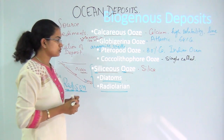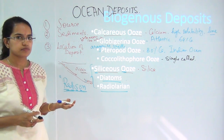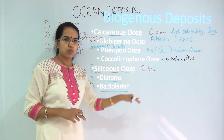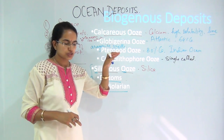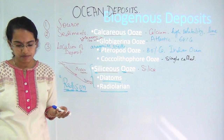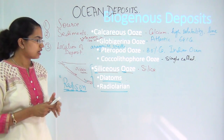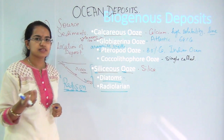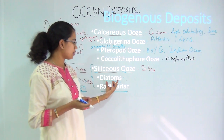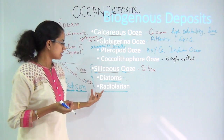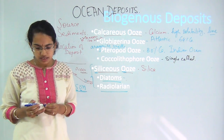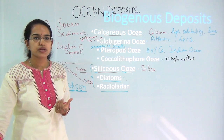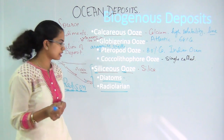For siliceous ooze, silica is the main content. Since silica is the main content, it is usually found at much deeper water levels compared to the others. Diatoms are small single-celled organisms, kind of amoebas, which are found under the ocean. Radiolarians are again single-celled organisms, which are found mainly in warm equatorial waters.